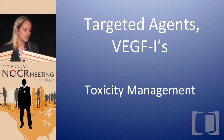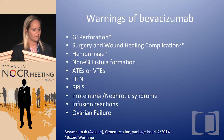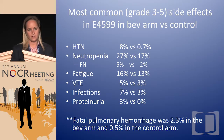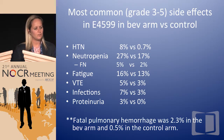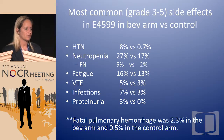Moving on to targeted agents — I'll start with the VEGF inhibitors. When patients come into my clinic, these are the box warnings. These are the most common grade 3 to 5 toxicities in the ECOG 4599 trial. There is an increase in neutropenia, and hypertension is probably the most common thing we see when adding bevacizumab. The fatal pulmonary hemorrhage rate was 2.3% in the bevacizumab arm versus 0.5% in the control arm.